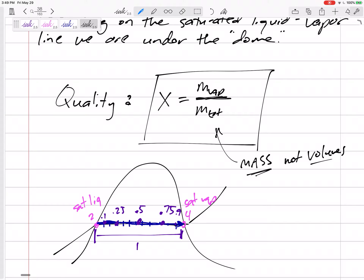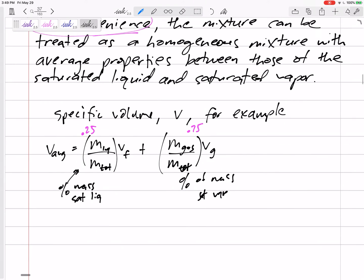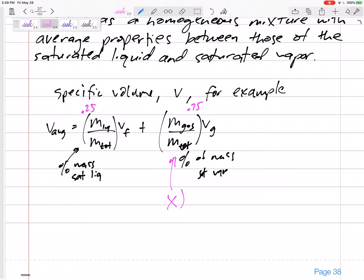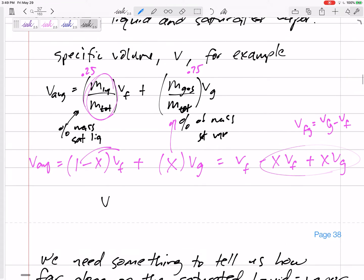If we have quality, let's do a little bit of math. If this is X right here, then this is X times V_G. This right here is not X. It's actually 1 minus X times V_F. So V average equals 1 minus X times V_F plus X times V_G. Distribute this: V_F minus X V_F plus X V_G. We know that V_FG is V_G minus V_F. Group those together. Factor out the X. V average is equal to V_F plus X V_FG.